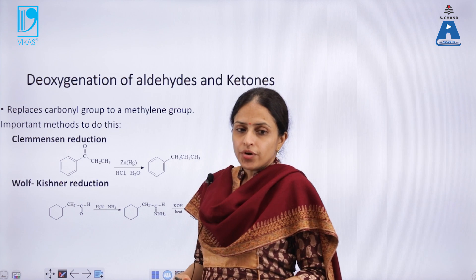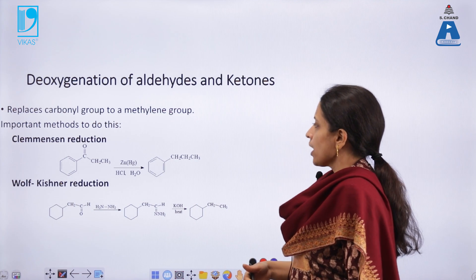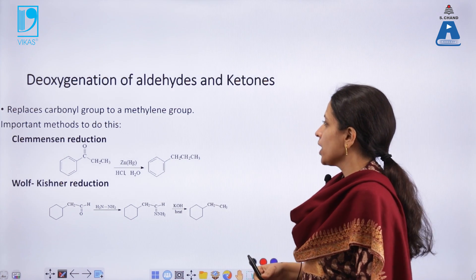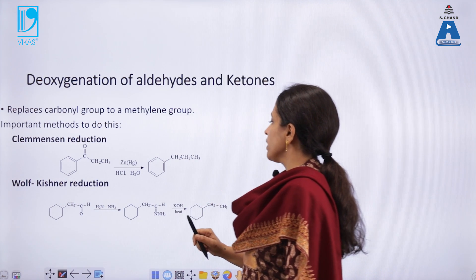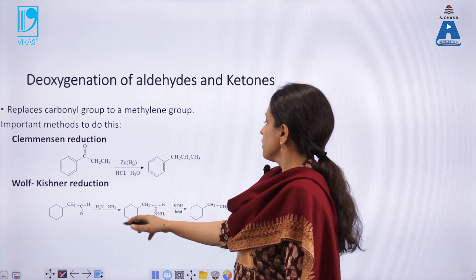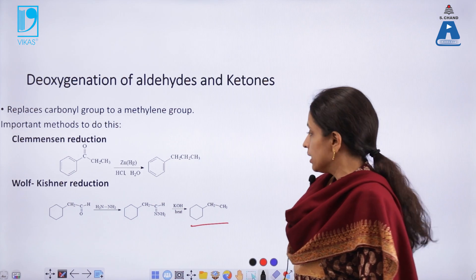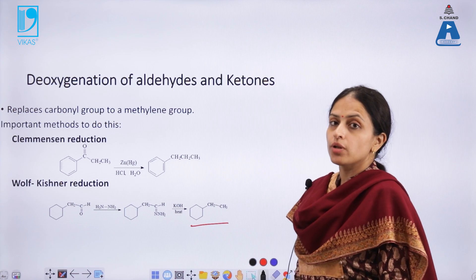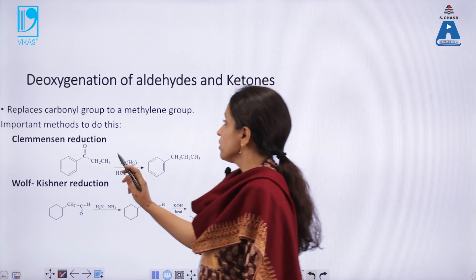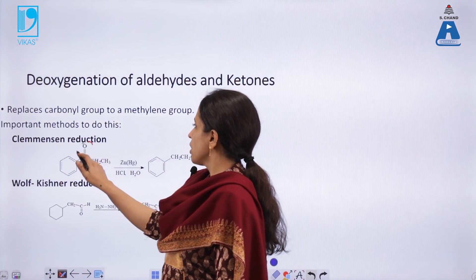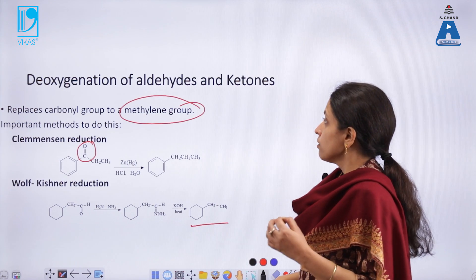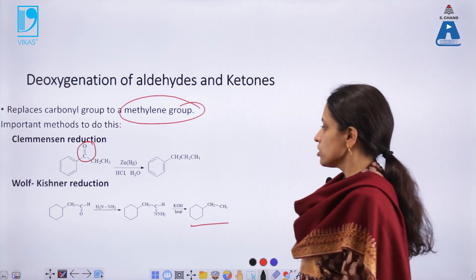In reduction reactions of carbonyl compounds using zinc amalgam and HCl, we get the saturated carbon chain — this is known as Clemmensen reduction. In Wolff-Kishner reduction, a similar product is obtained, but the reaction uses hydrazine; the corresponding hydrazone is formed as a product, which on further reaction with potassium hydroxide at elevated temperatures gives the saturated carbon chain. Both Clemmensen and Wolff-Kishner reductions are easy methods of replacing a carbonyl group with a methylene group.